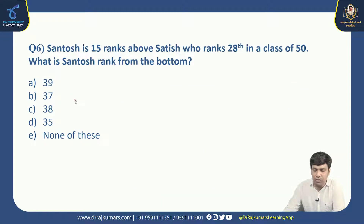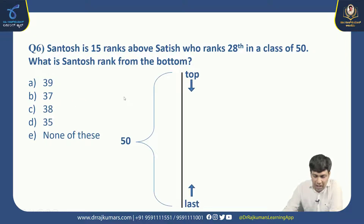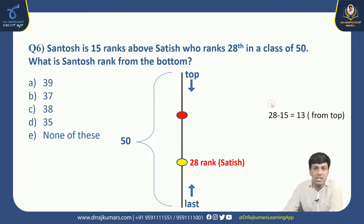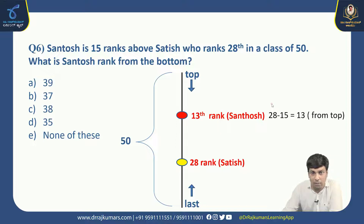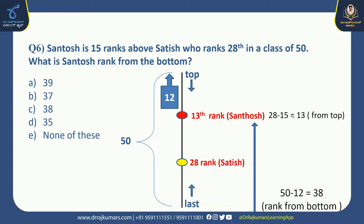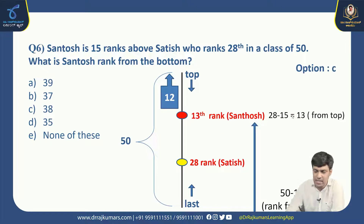Next: Santosh is 15 ranks above Satish, who ranks 28th in a class of 50. What is Santosh's rank from the bottom? 15 ranks above 28th means 28 minus 15 equals 13. So Santosh is 13th from the top, meaning 12 students are behind him. 50 minus 12 equals 38. Santosh's rank from the bottom is 38. Right option is C.